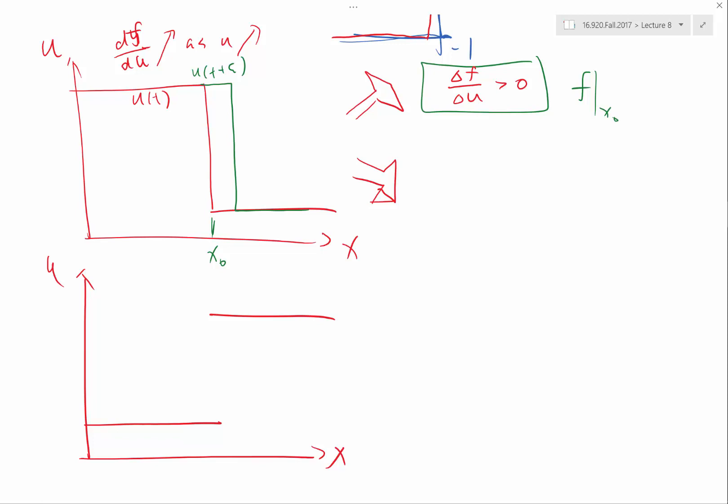What is the flux at the original discontinuity at x0 after epsilon amount of time has passed? So the flux at t equals the flux evaluated at ul. Because after the shock has moved for a little bit, the solution here is ul. So my flux in this case should be f of ul.